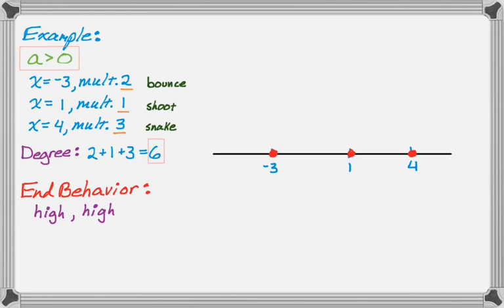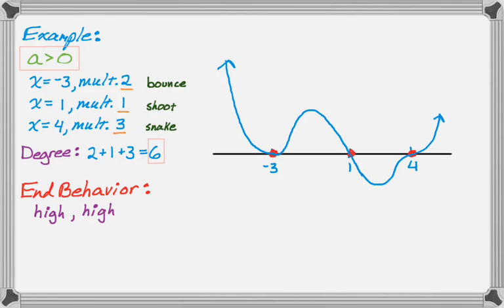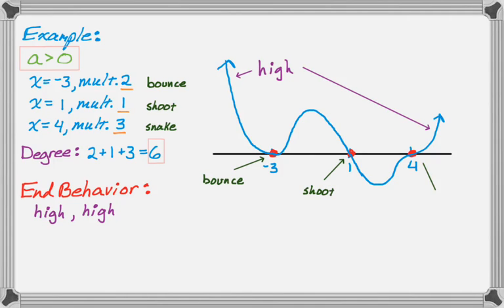It starts high and goes to negative 3, where it bounces — turns around — then shoots straight through 1. At x equals 4, it snakes its way through, passing through the axis and changing shape. Looking at the graph we created: it starts high and ends high, bounces at negative 3, shoots straight through 1, and snakes through 4. We've done the job we were setting out for.